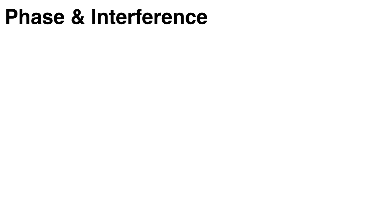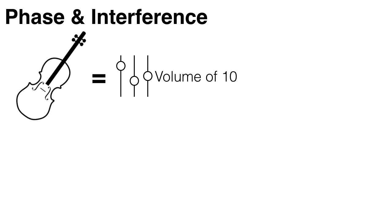So let's say you're sitting in a quiet room and a single person plays one note on a violin. You can hear the violin very clearly, and let's say the loudness level or air pressure level is ten.